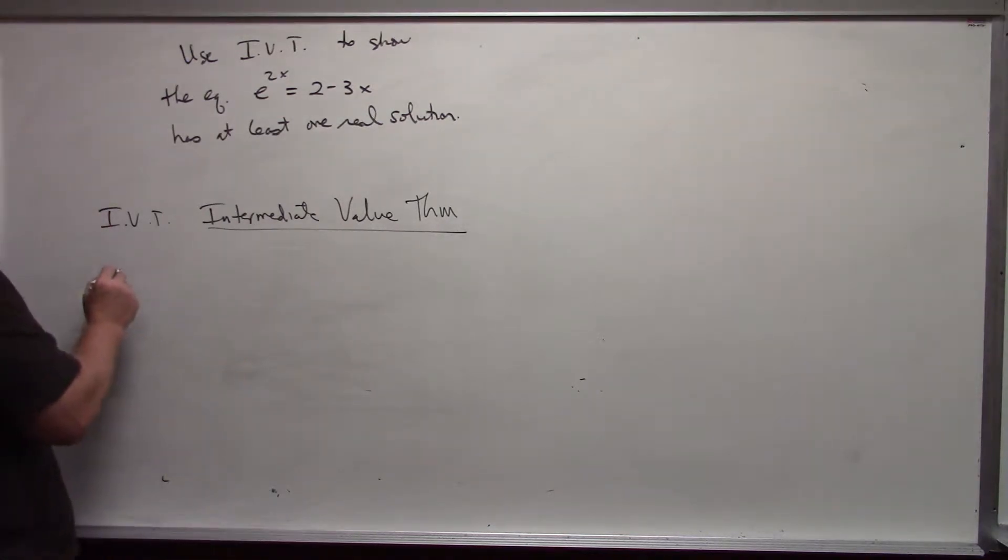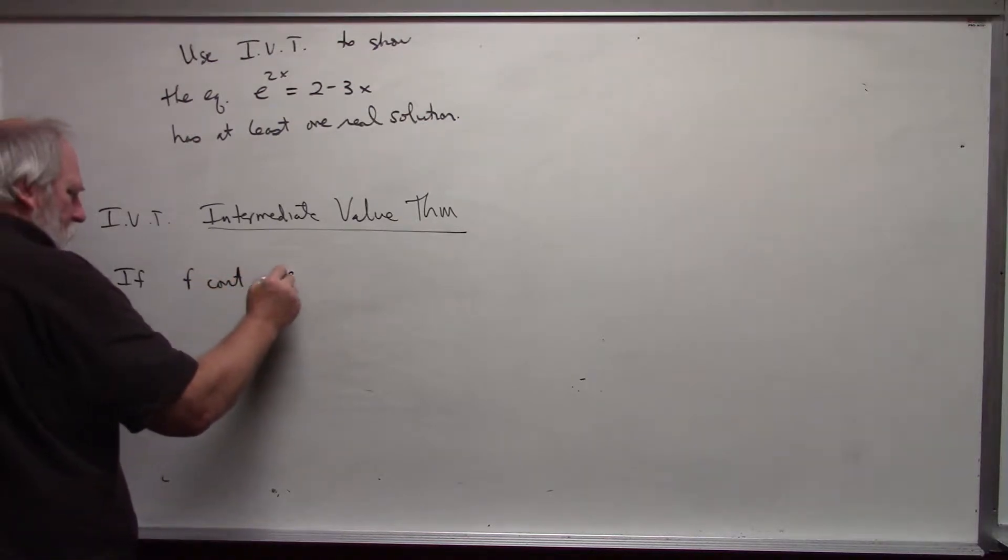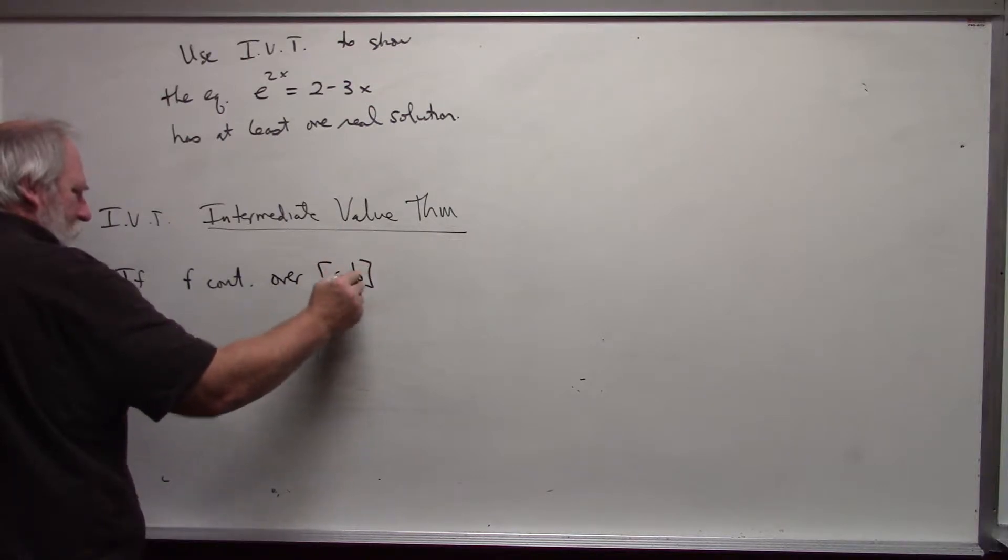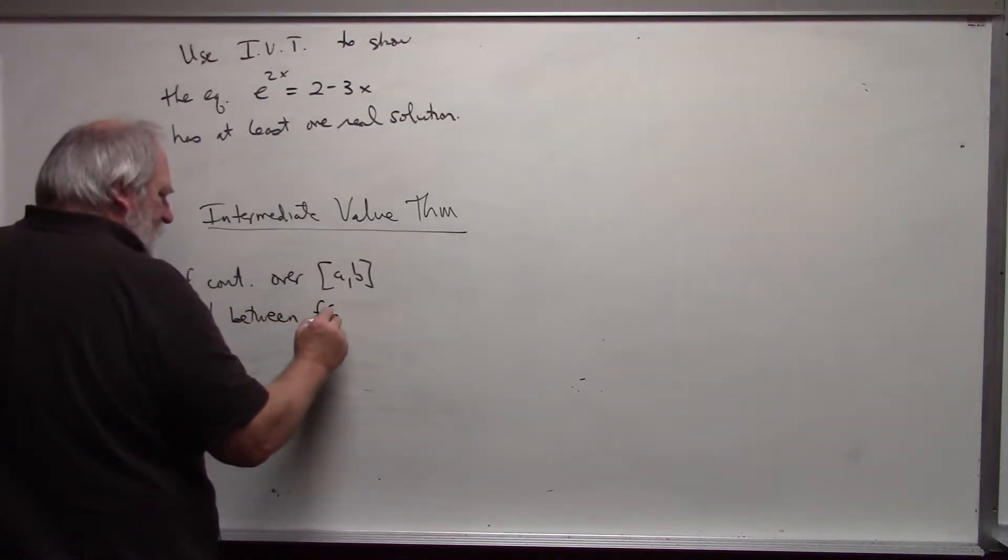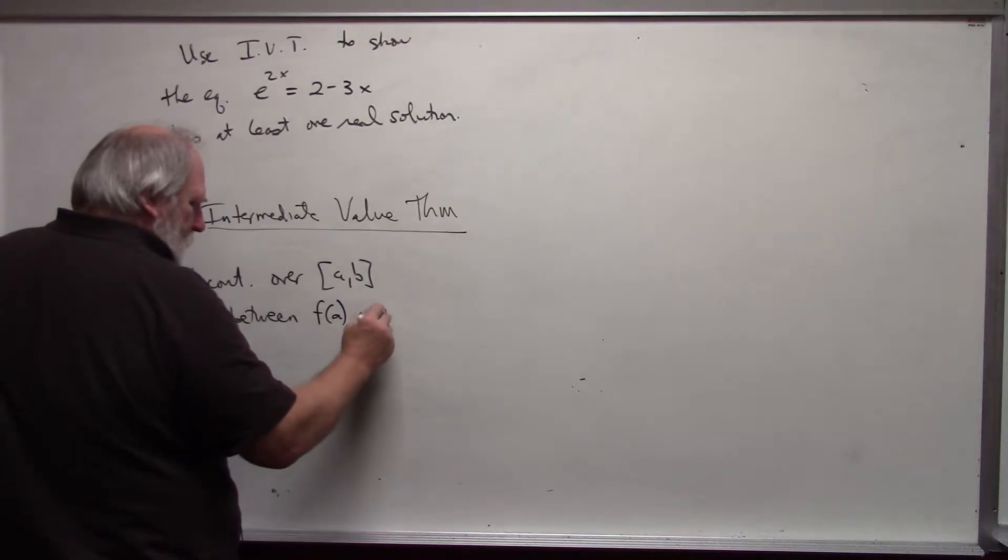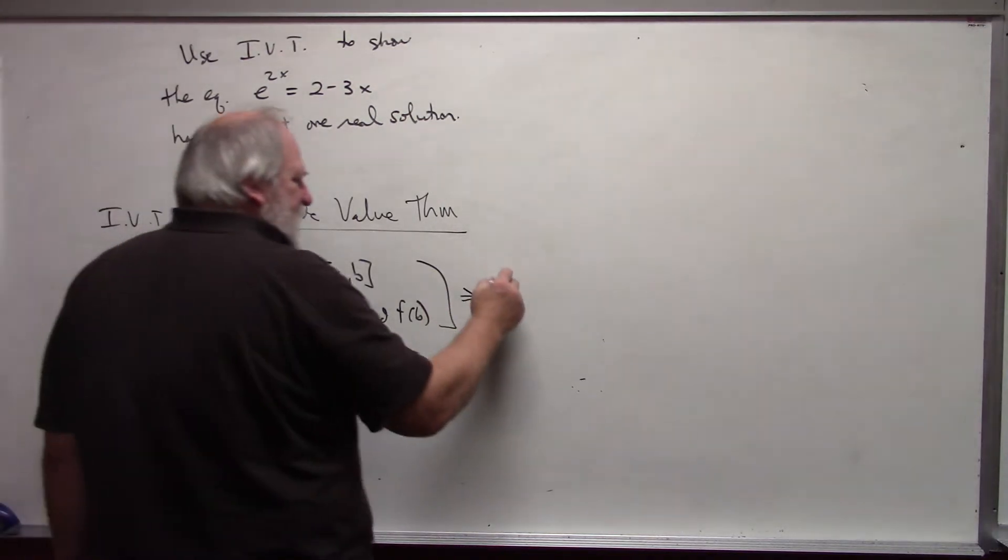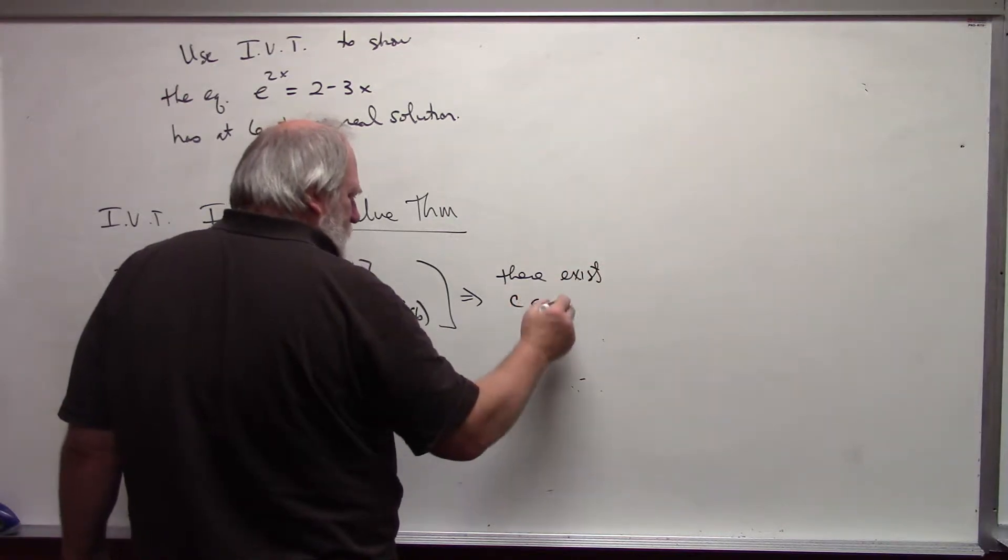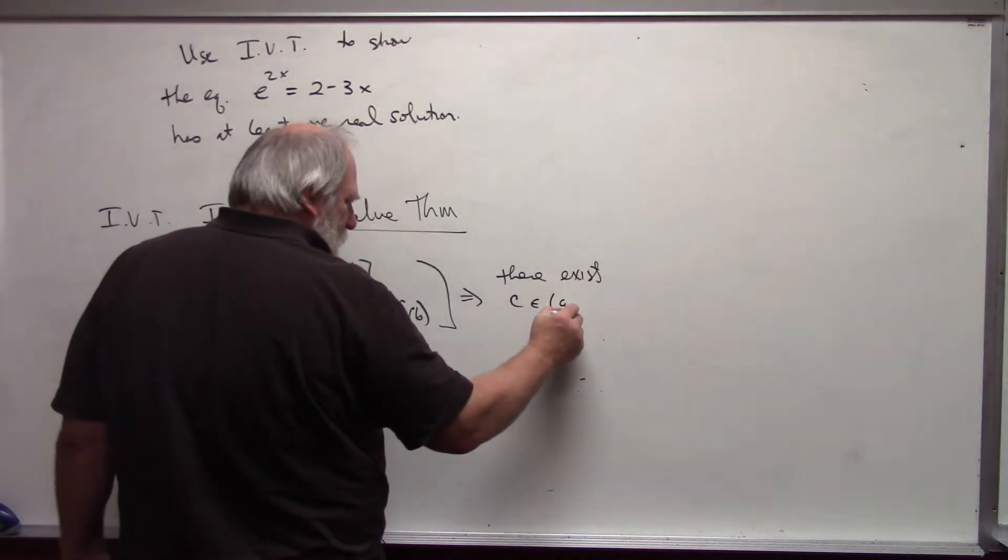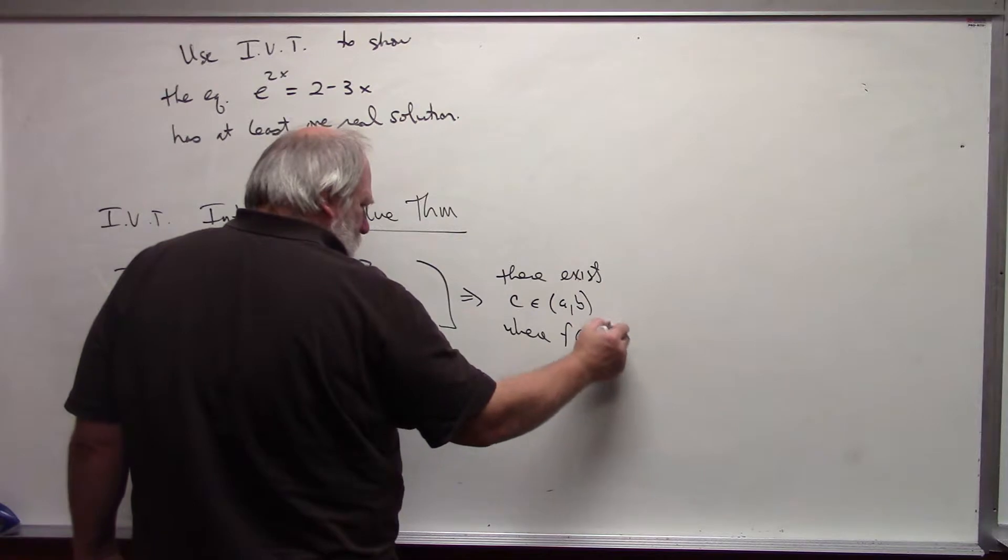if F is continuous over a closed interval [A,B] and capital N is between F(A) and F(B), then the conclusion is there exists some C in the open interval (A,B) where F(C) equals capital N.